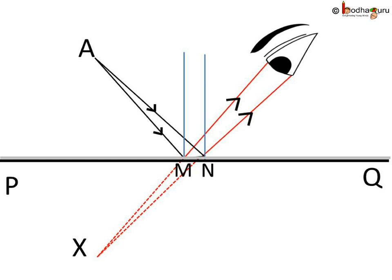We can say that a virtual image of point A is formed at X.